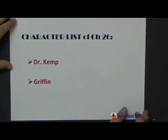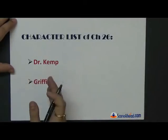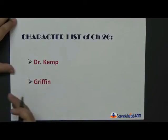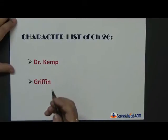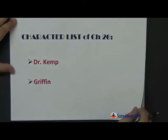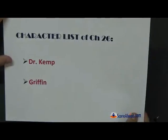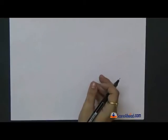The list of characters in this chapter is Dr. Kemp and Griffin. Dr. Kemp is basically the person who is planning. The narrator explains how Dr. Kemp goes about with his plans, how the plans progress, and Griffin is the character who commits the heinous, brutal murder of an innocent man — Mr. Wicksteed.